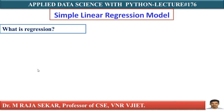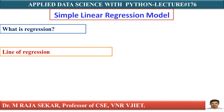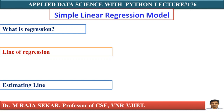What is regression? In regression, we can estimate the value of one variable with the value of another variable which is known. The statistical method which helps us to estimate the unknown value of one variable from the known value of the related variable is called regression. The line describing the average relationship between two variables is known as the line of regression. Nowadays, we are using the term 'estimating line' instead of regression line.